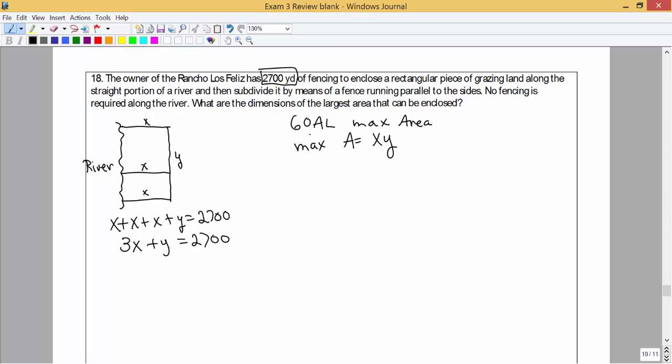Since this is what we want to maximize, this is kind of our focus equation. We would like for this to be in terms of only x and not y. So let's go over here to this equation, which is not our focus equation but kind of a peripheral equation, still true but not the focus. Let's rewrite this in terms of only y. When we subtract 3x from both sides, we wind up with y is equal to 2700 minus 3x.